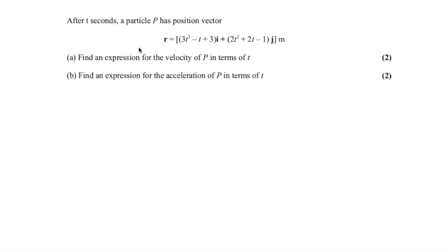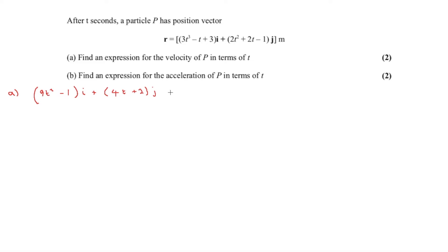The second question gives us a position vector r and asks us to find the velocity and then the acceleration. Since we have displacement, we differentiate to find velocity. Differentiating 3t³ gives 9t², then − t gives −1, and the constant 3 disappears, giving the i component. Differentiating the j part gives 4t + 2, so velocity v = (9t² − 1)i + (4t + 2)j meters per second.